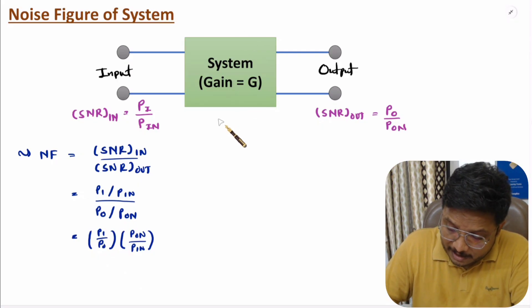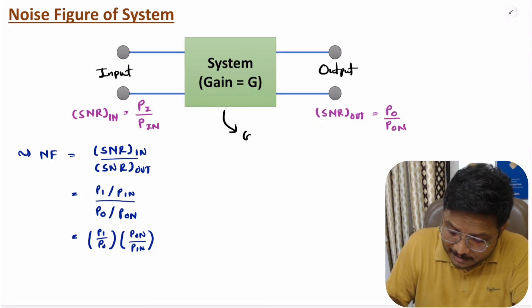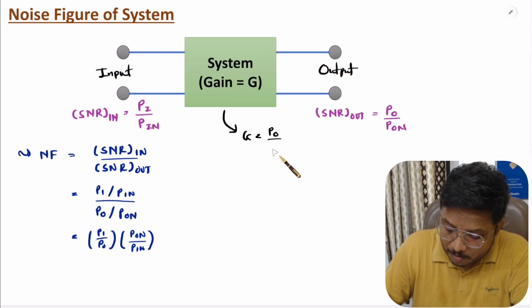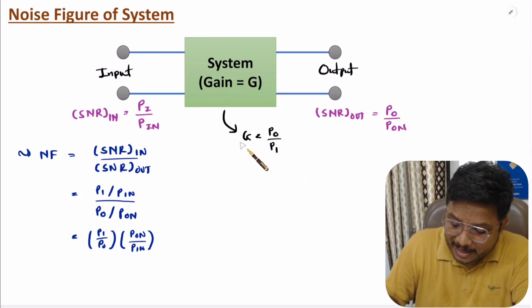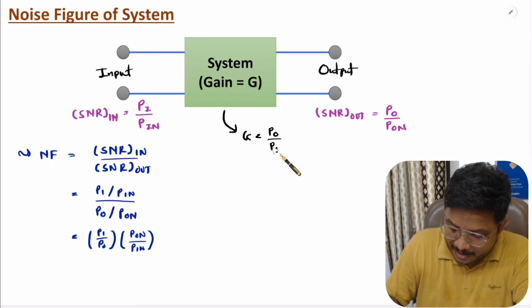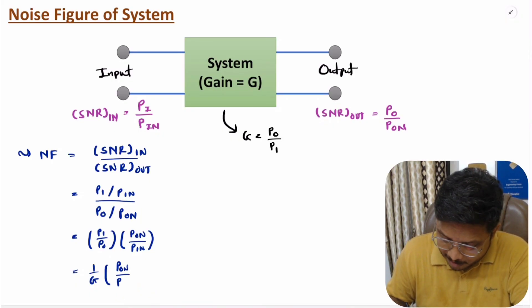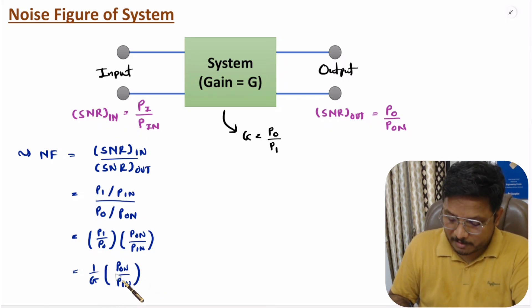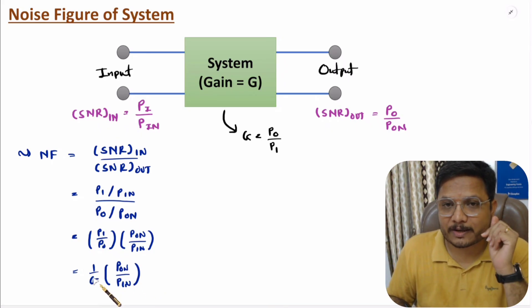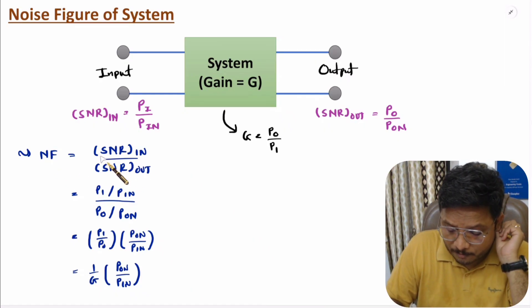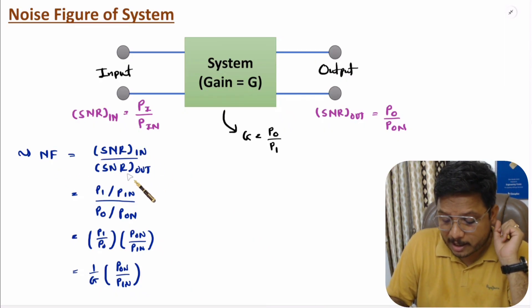Gain G means it is the ratio of output to input, so G = P_O / P_I. If you substitute this into the noise figure expression, then noise figure = (1/G) × (output noise power / input noise power). So based on this equation one can also understand the calculation of noise figure. Ultimately, it is a ratio of SNR at input divided by SNR at output.